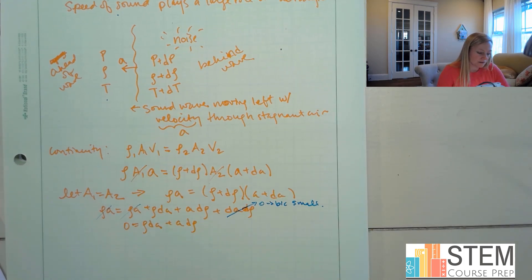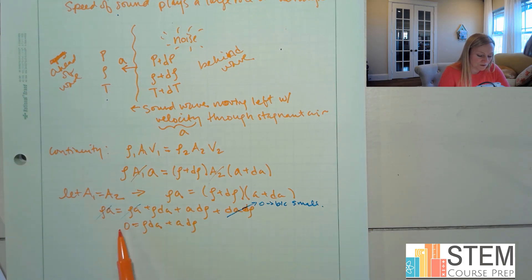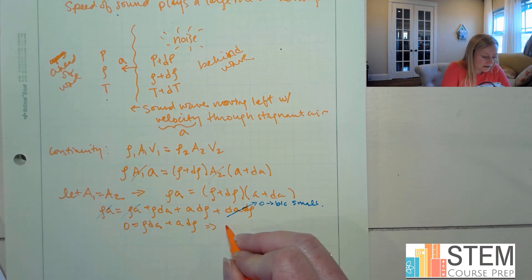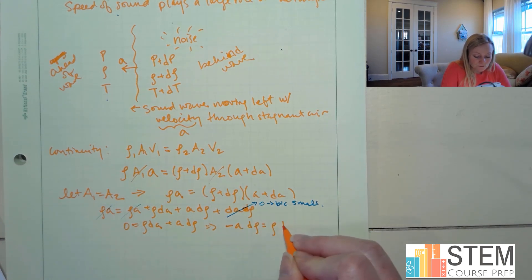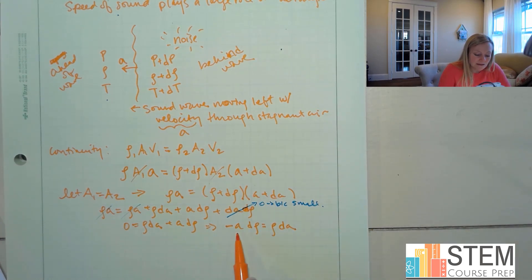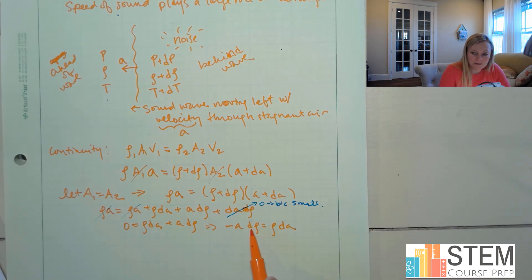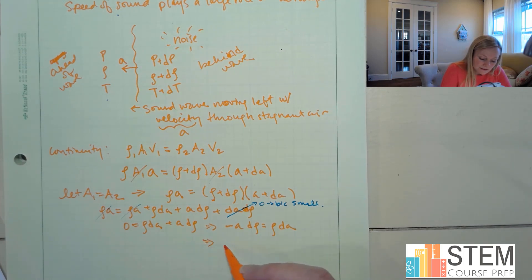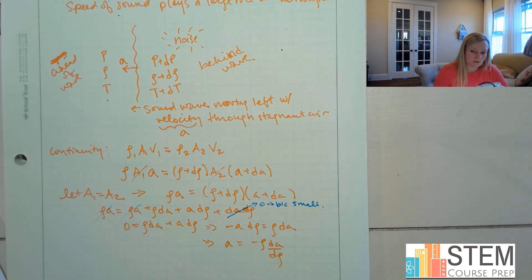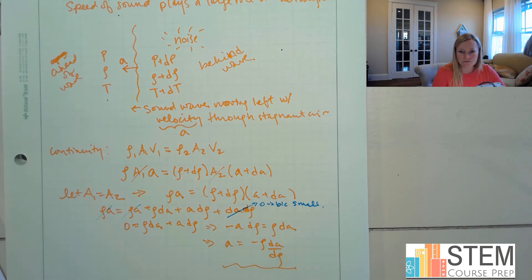That leaves us with 0 = rho*dA + A*d_rho. Bringing the second term over: -A*d_rho = rho*dA. Solving for A gives us A = -rho*dA / d_rho. So that's one version of the equation for the speed of sound, but it's not overly useful because we've got these differentials in it.